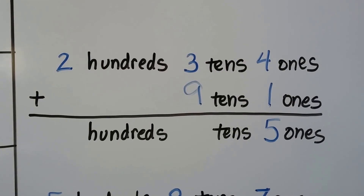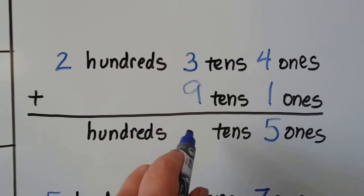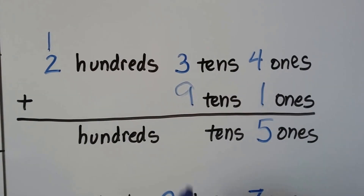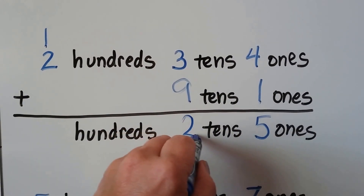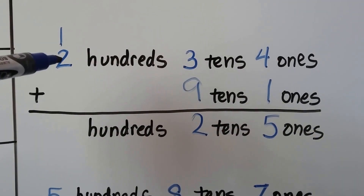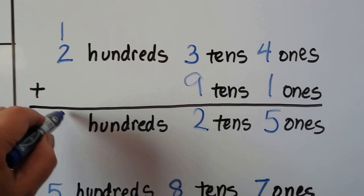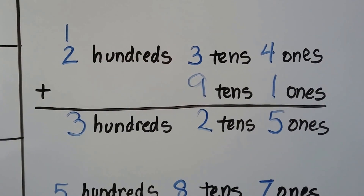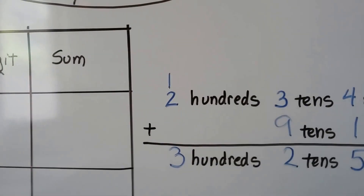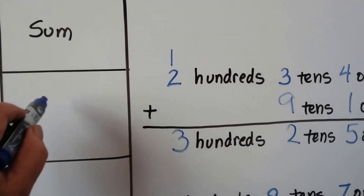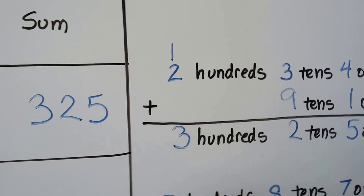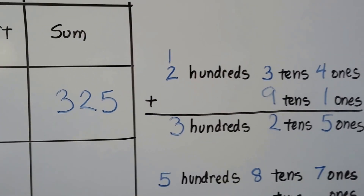So we have twelve tens, so we need to regroup. We can't have two digits in the tens place — we can't write twelve there. So we regroup the one up here and the two down here. Now we add the one and the two to get three. So we have three hundreds, two tens, and five ones. We write our sum: three hundred twenty-five.